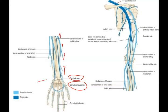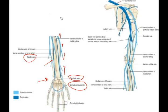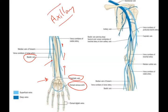From the medial side of the dorsal venous arch, the basilic vein starts. It runs on the medial border of the forearm and enters the arm, running a few inches on the medial border, then pierces the deep fascia and joins the brachial venae comitantes. The venae comitantes are deep veins accompanying the brachial artery.